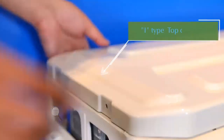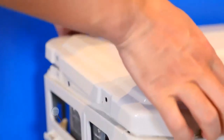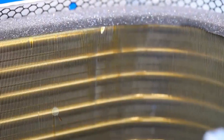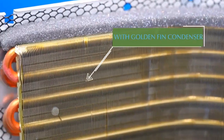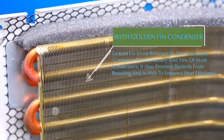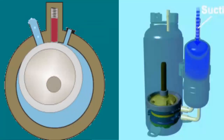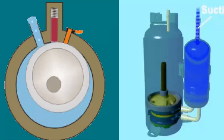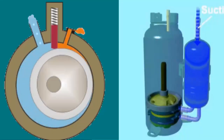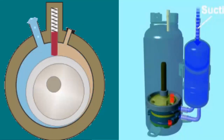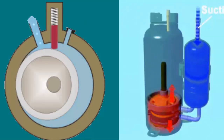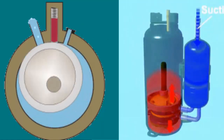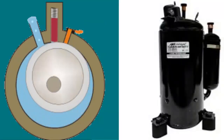Firstly, we must mention that most 12,000 BTUs per hour air conditioning units use rotary compressors. These compressors are more cost-effective to manufacture, compact, and offer high performance, low noise levels, and acceptable durability.